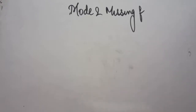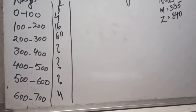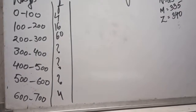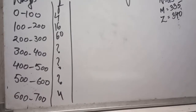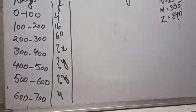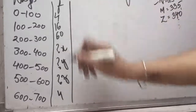Let us see one example of three missing frequencies. Here you can see the class intervals have been given from 0 to 100, going till 600 to 700. Frequencies are also given and three values are missing. When three values are missing, three informations have been given: N is given as 230, median is given, and mode is given. We have to calculate the three values — let us name them x, y, and z.